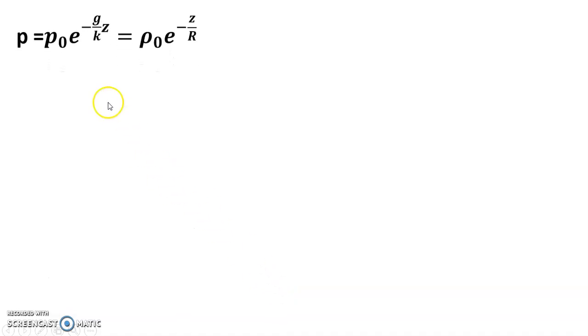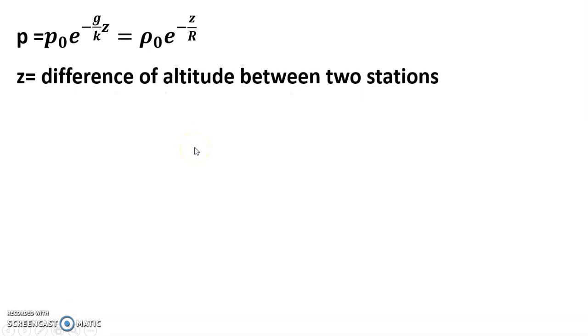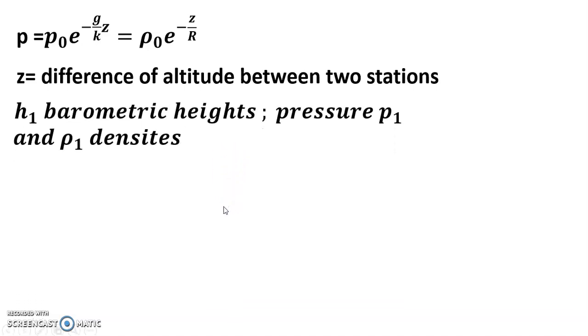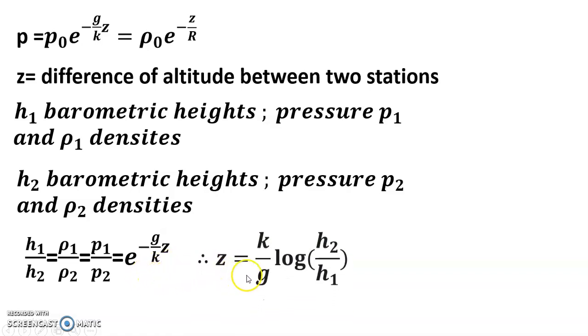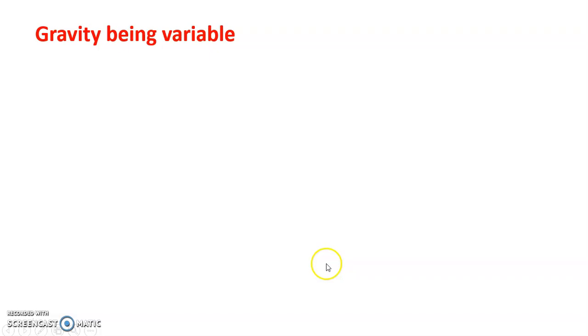So p = p₀e^(-gz/k) and ρ = ρ₀e^(-z/H). The difference in altitude between two stations: h₁ has barometric height with pressure p₁ and density ρ₁, and h₂ has barometric height with pressure p₂ and density ρ₂. So h₁/h₂ = ρ₁/ρ₂ = p₁/p₂, and we get e^(-gz/k). Therefore z = (k/g)log(h₂/h₁). Gravity being variable: